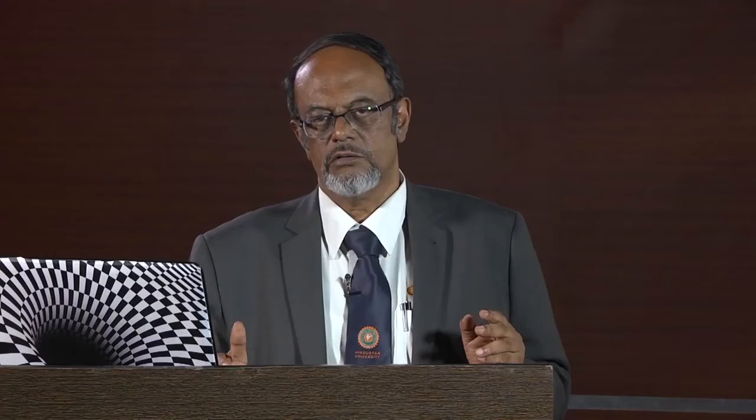In the equilibrium position, the deflecting torque equals the controlling torque — that is when the pointer comes to a stop. The deflecting torque is proportional to the input current, while the controlling torque is proportional to the sine of the angle through which it has moved. So ultimately the measured current is proportional to the sine of the angle, meaning the deflection is proportional to the current. The complication here is this sine factor — because of that, the scale of a gravity control device is not uniform. This can be a nuisance.